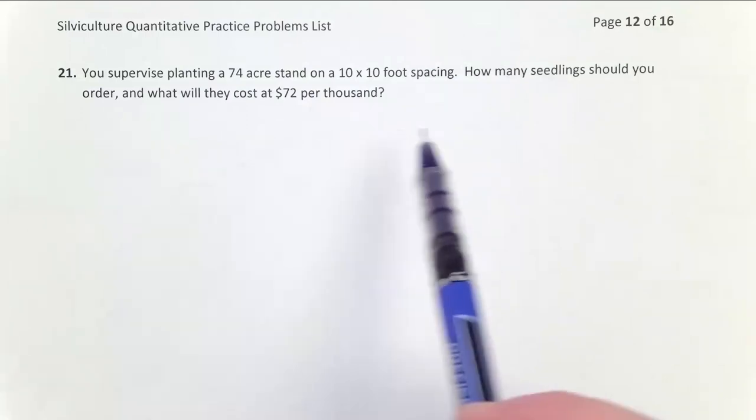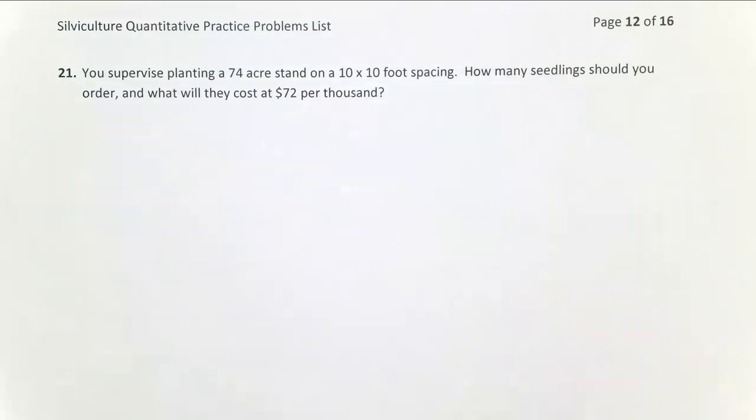In this problem, we need to order seedlings again, and we also want to see how much the seedlings are going to cost. This is a more complex problem than problem 20 because we're given the spacing rather than the trees per acre, so we have an extra step there, and we have an extra step in discerning the cost.